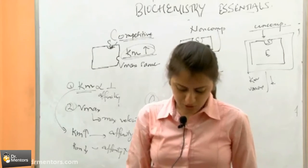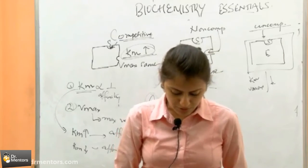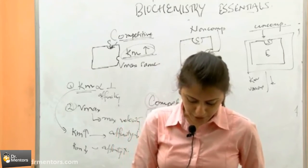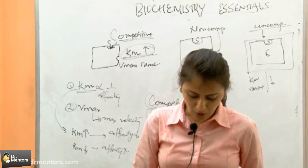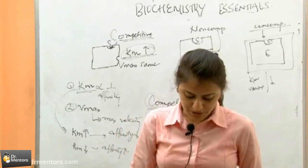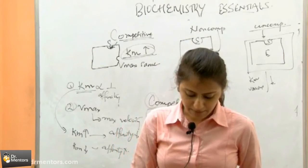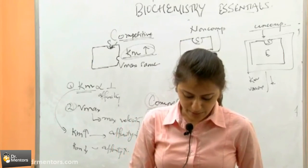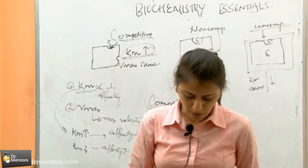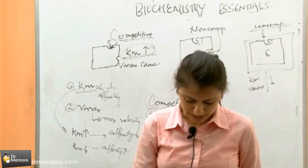So the answer to the 4th MCQ would be: in competitive inhibition, Km increases and Vmax is same — so the answer is option B.